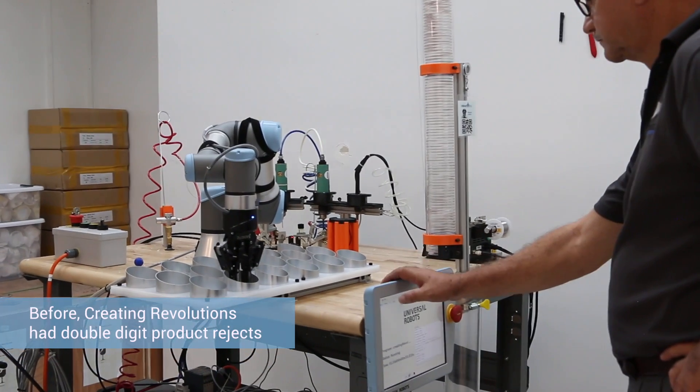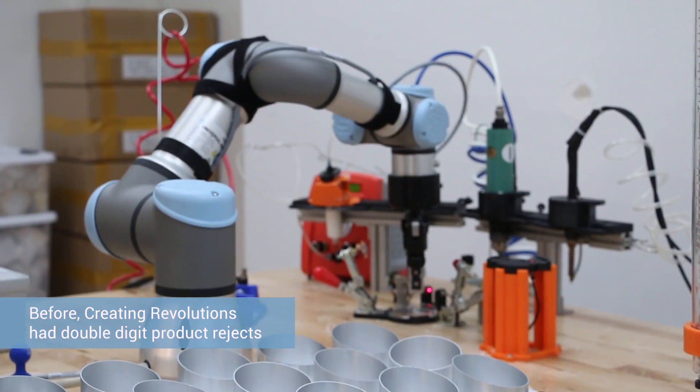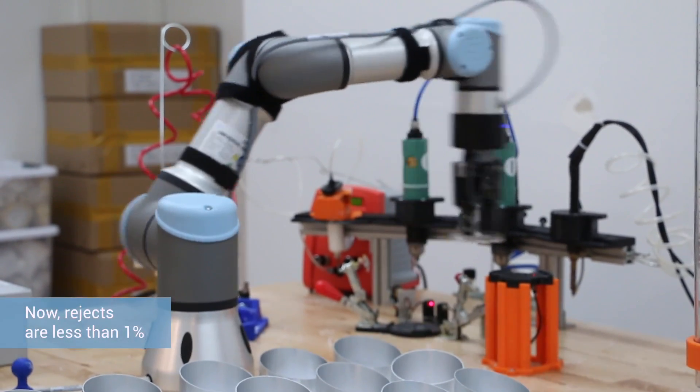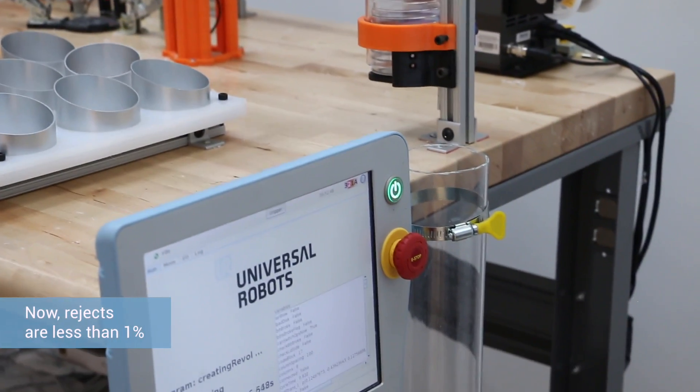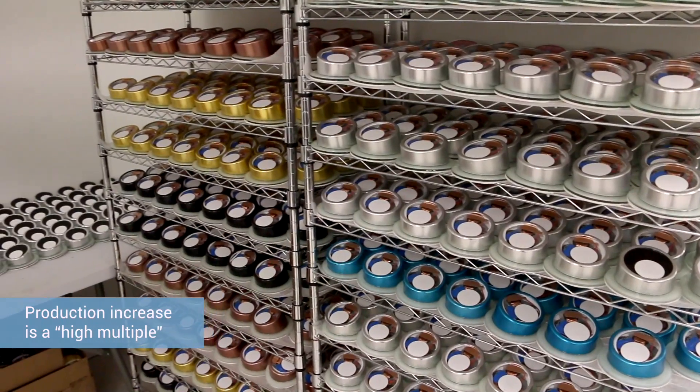Before the robots were here, we were looking at basically double digits the number of units that were being built wrong or had a flaw. With the robot now, we're less than 1%. The increase in production has been a high multiple.